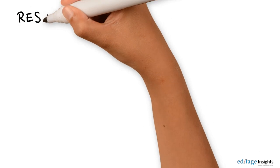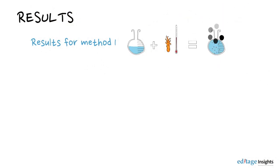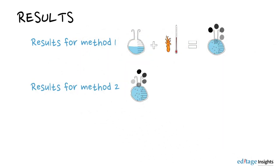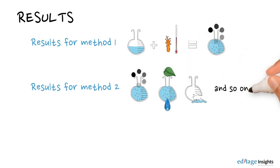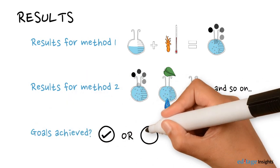In the results section, you must report the results for each method used and mention whether you were able to achieve the goals of your research.